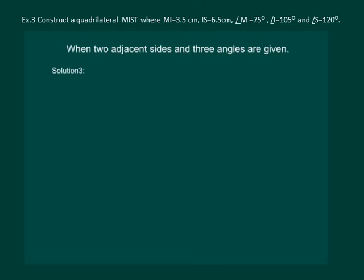Let us read the question and side by side draw a rough sketch of the required quadrilateral. According to the question, construct a quadrilateral MIST where MI is equal to 3.5 cm.